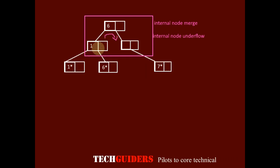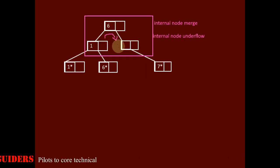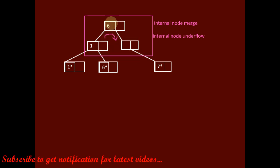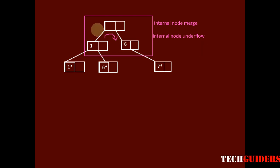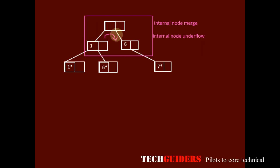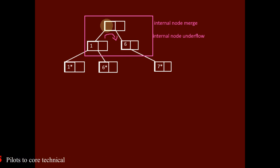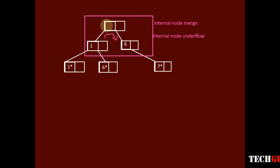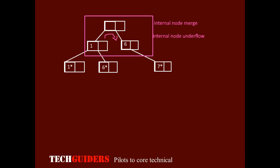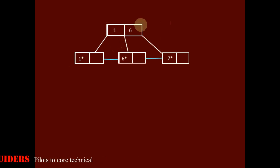Since the sibling cannot provide a key, the next option is to merge. This merging is done through the parent as a rotation — everything merges into a single node, and there will be nothing in the parent. Six comes down and both nodes get merged. Now there is an underflow on the root node, but we cannot borrow or merge with a sibling since there is none. So the last option is to reduce one level — one level will be reduced and the final B+ tree is the result.